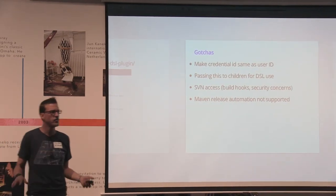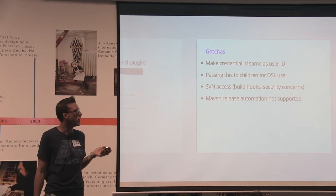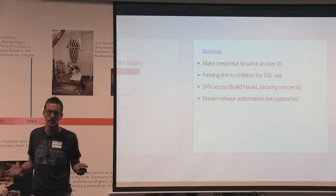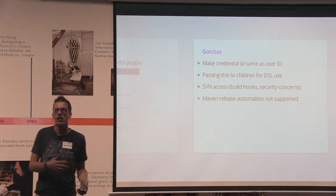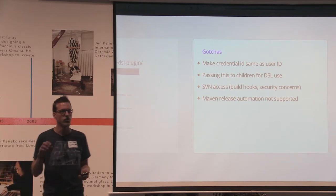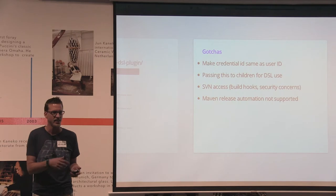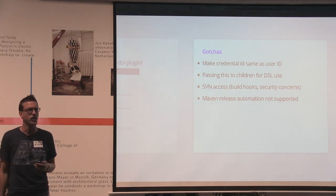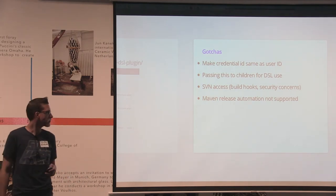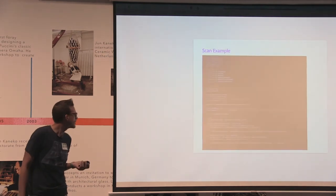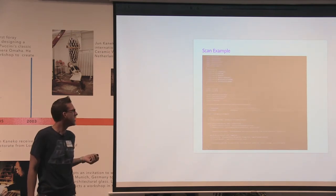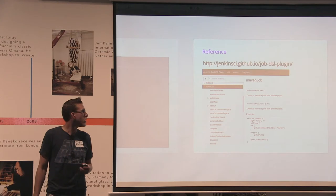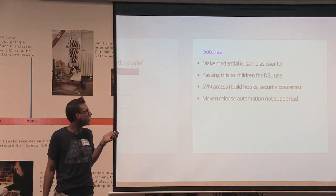A few gotchas: when configuring credentials in Jenkins for your SVN repository, it's useful to assign the credential ID the same value as the user ID. If you don't, Jenkins generates a long unreadable string for the credential ID, which you then have to reference in your scripts. By naming it the user ID — like 'dcmp10' — it's much easier to use, for example as globals.credentials in the script.